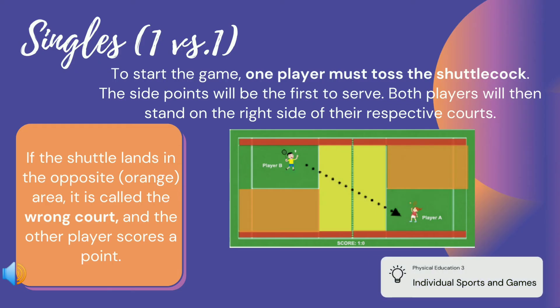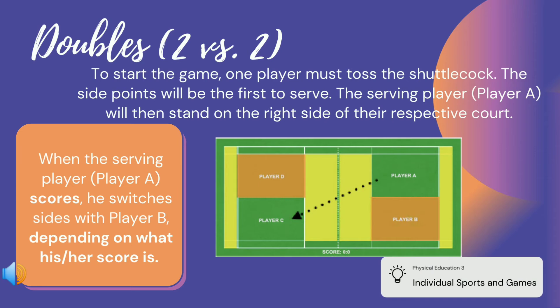For singles, to start the game one player must toss the shuttlecock. If the shuttle lands in the opposite area it is called the wrong court and the other player scores a point. For doubles, to start the game one player must toss the shuttlecock again. When serving, if player A scores, he switches sides with player B depending on his or her score.